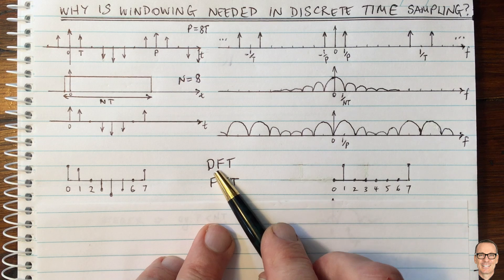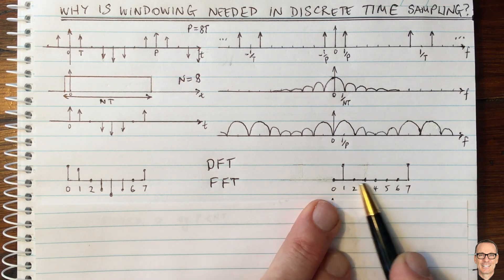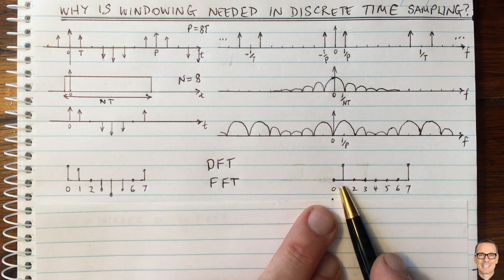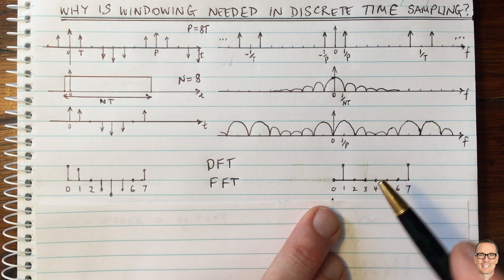sequence of numbers. And when we take the DFT or the FFT, this is what we get. In this case, it matches up perfectly with what we were expecting to get.